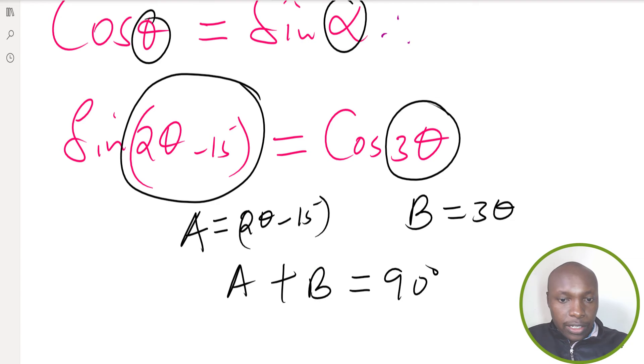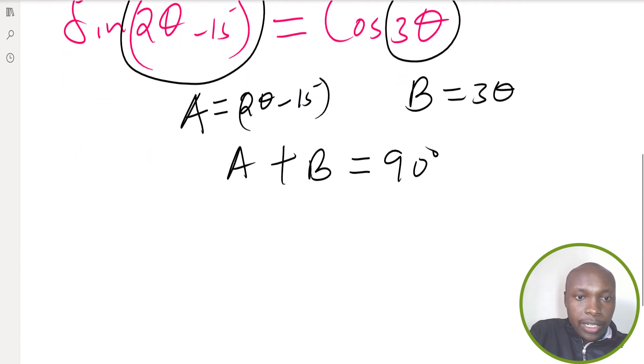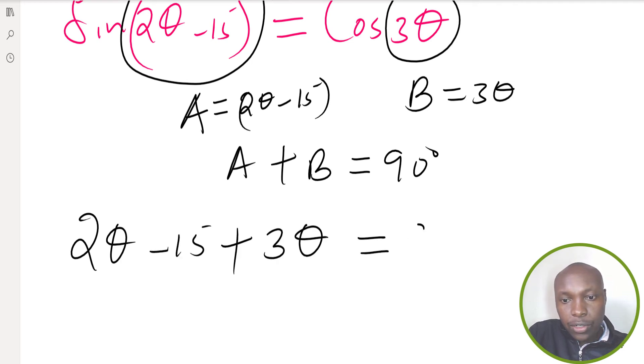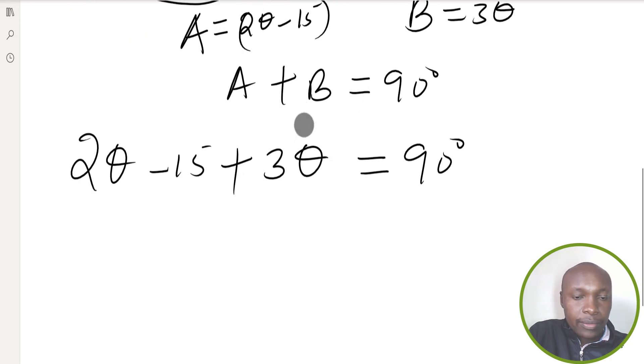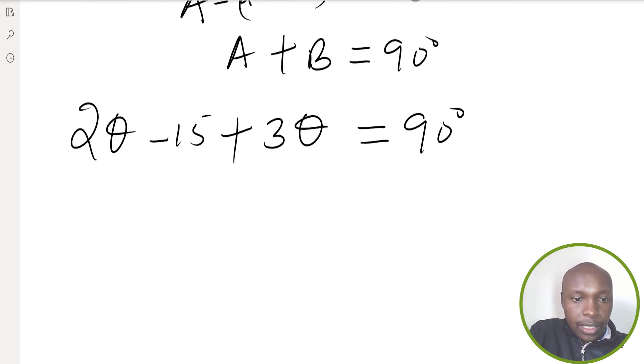So let me add them. We have 2θ minus 15 plus 3θ - that should give 90 degrees. So 2θ plus 3θ, you get 5θ equals - take negative 15 to the other side - you get 105 degrees.